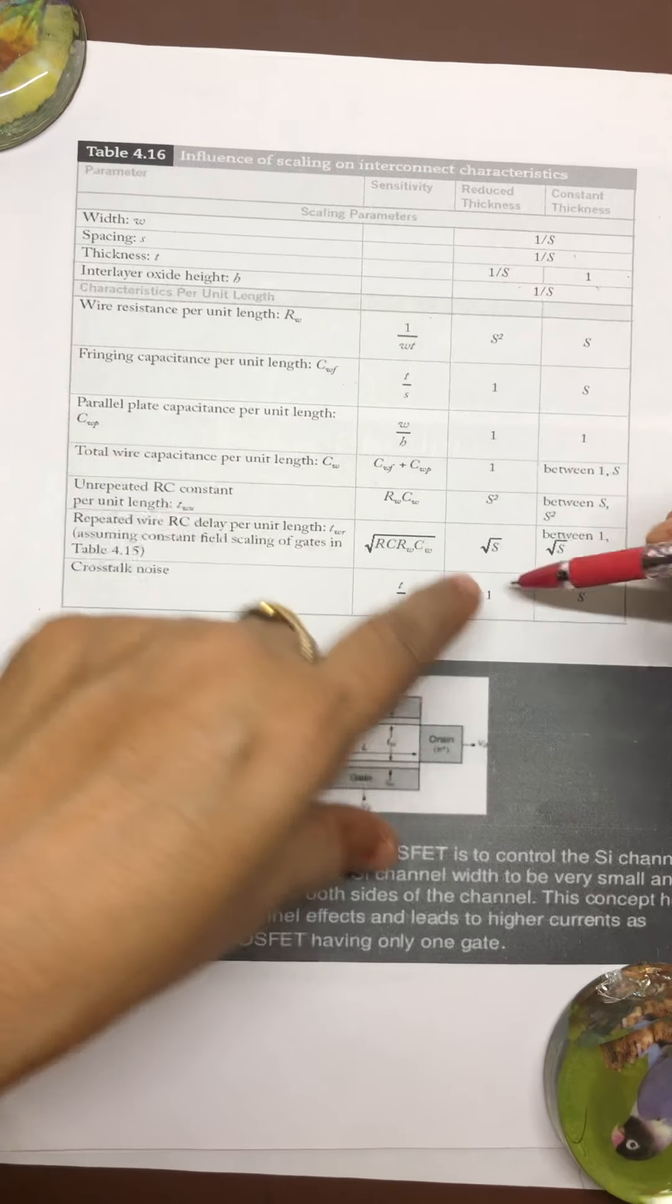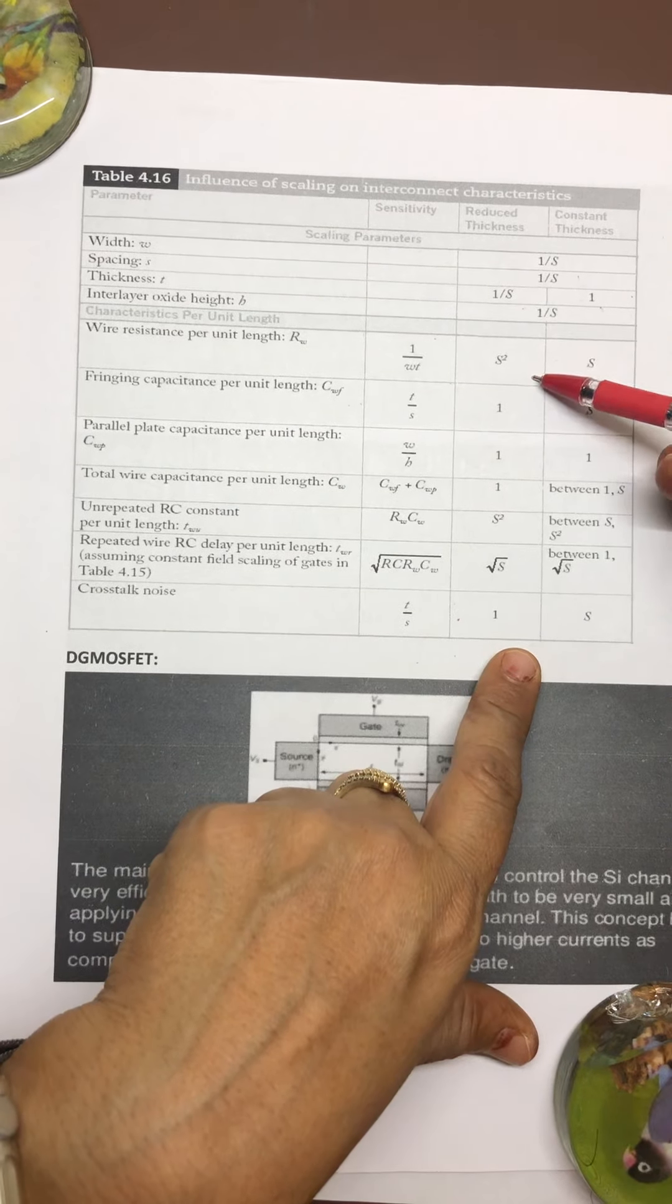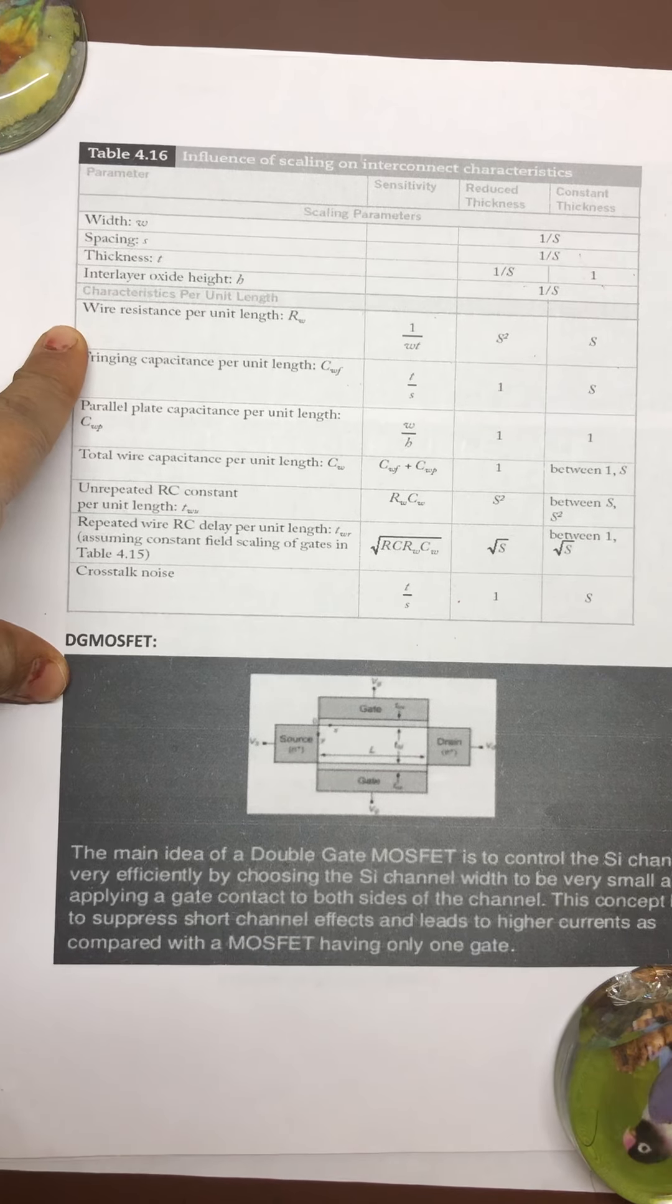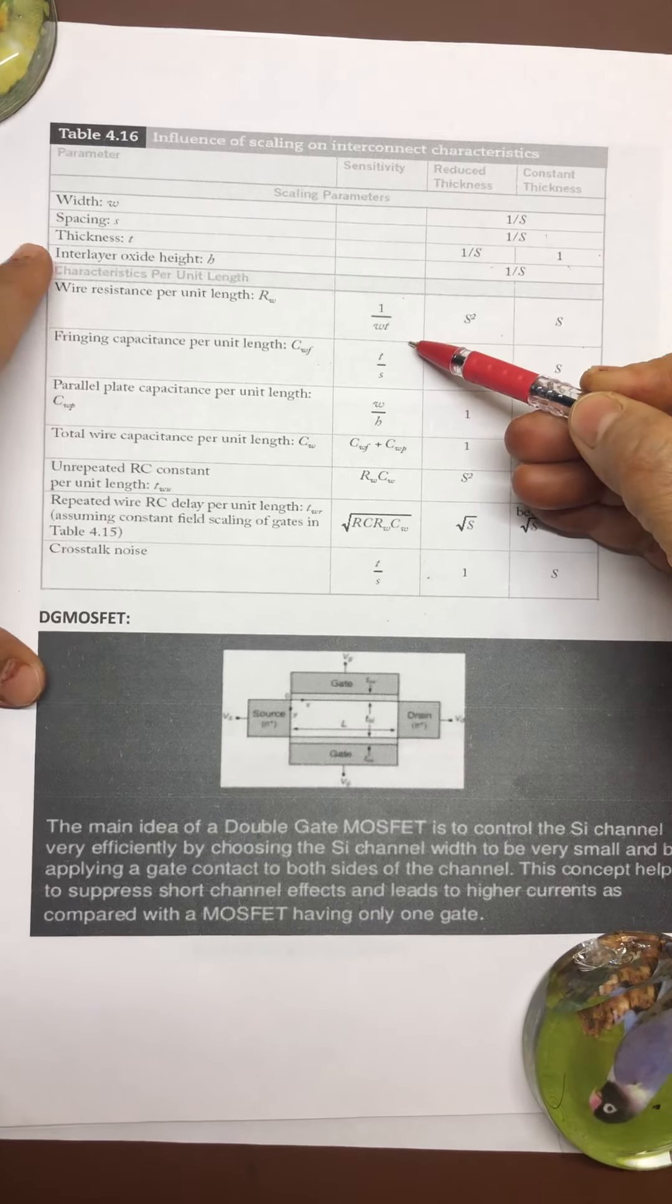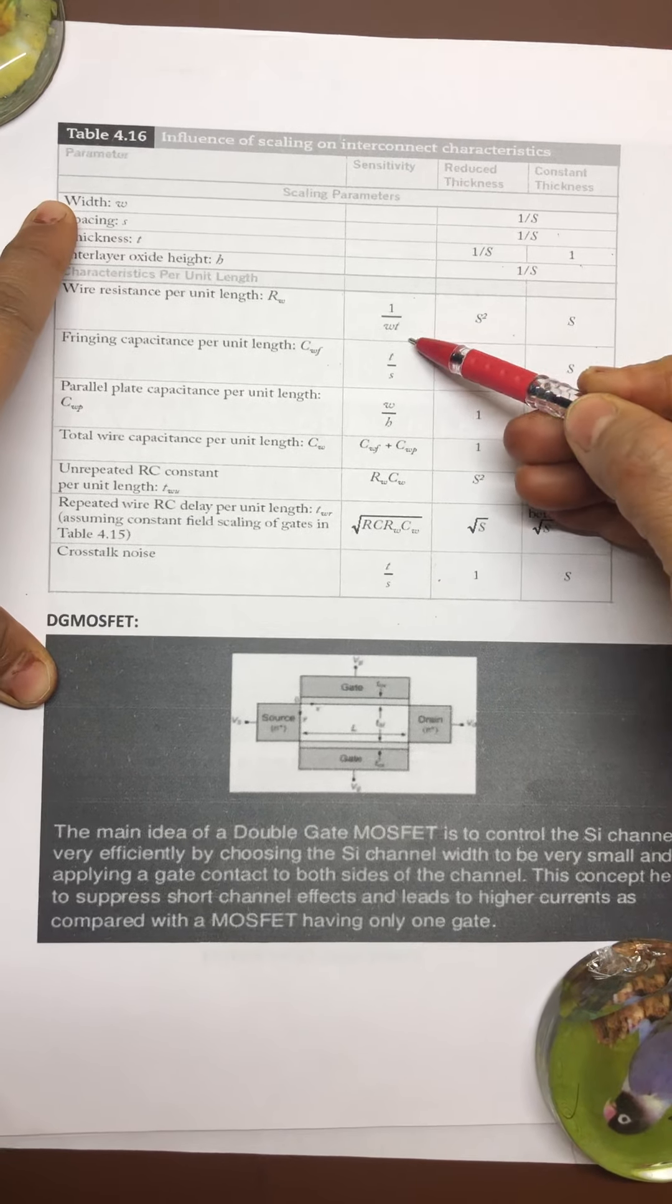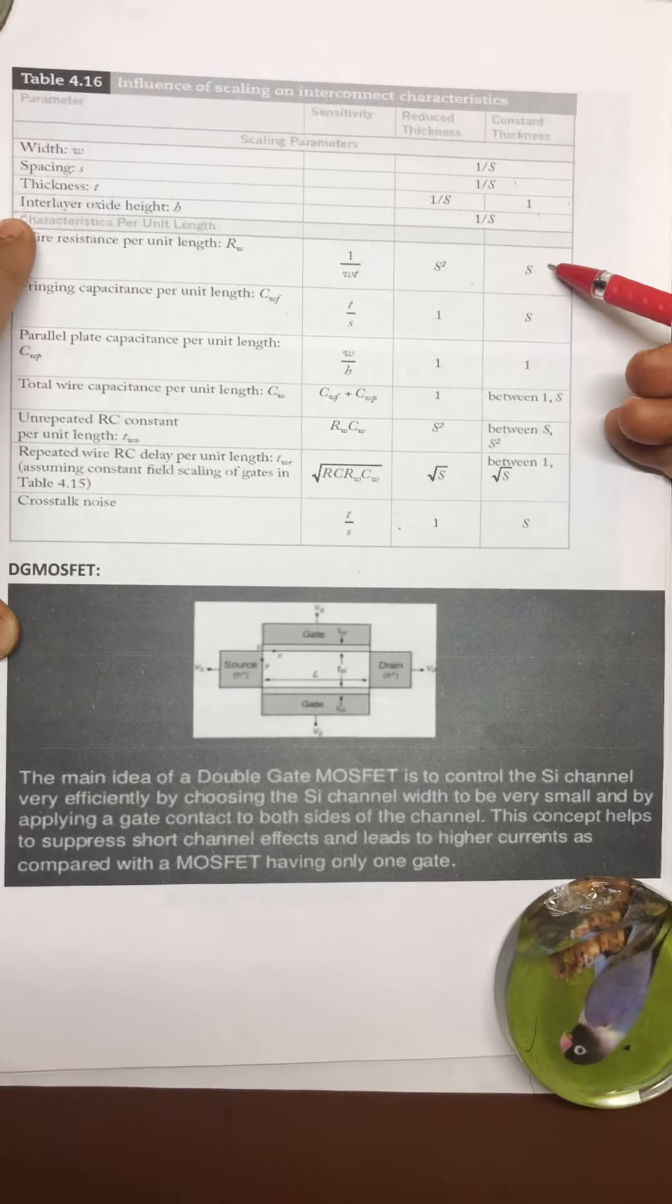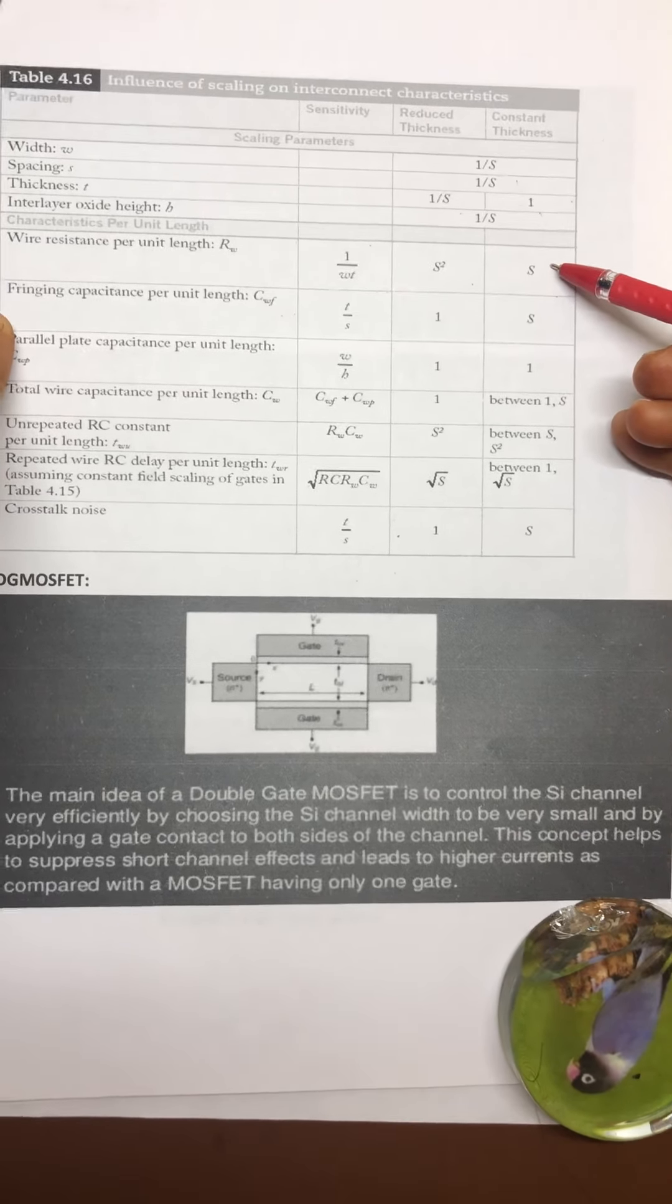With respect to this, for constant thickness, for R_W it is 1 upon W times T. What is T? T is thickness, W is width, so 1 upon width multiplied by thickness, and their variation is like this.